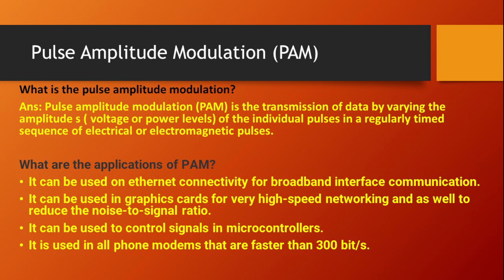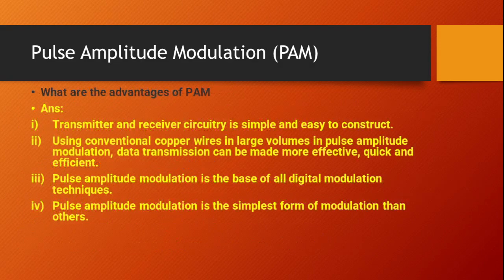What are the applications of PAM? The first application is it can be used on Ethernet connectivity for broadband interface communication. It can be used in graphics cards for very high speed networking, as well as to reduce the noise-to-signal ratio. It can be used to control signals in microcontrollers and is also used in phone modems faster than 300 bits.